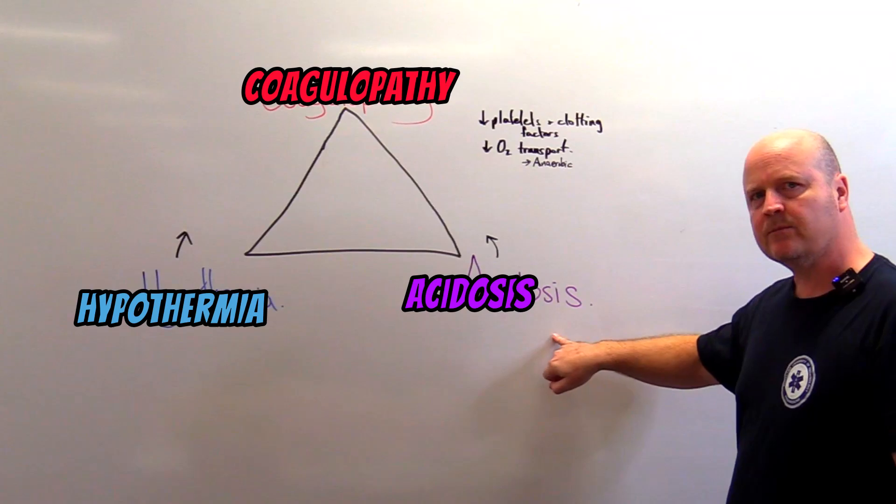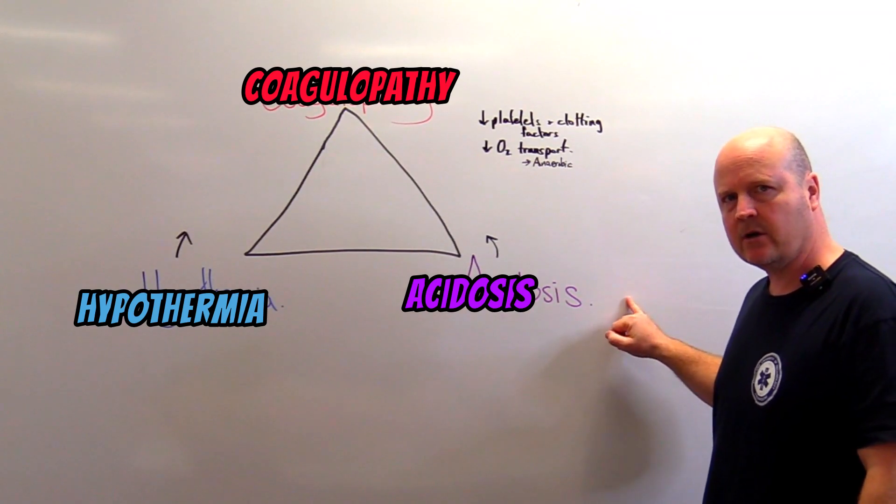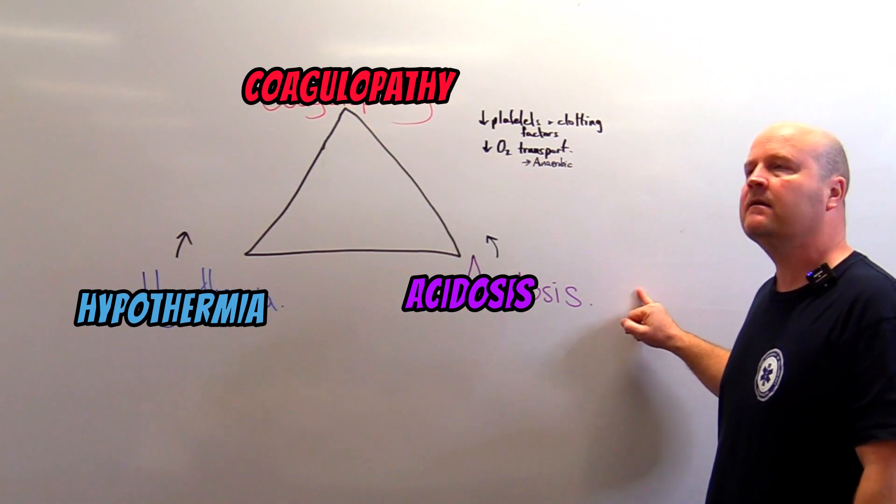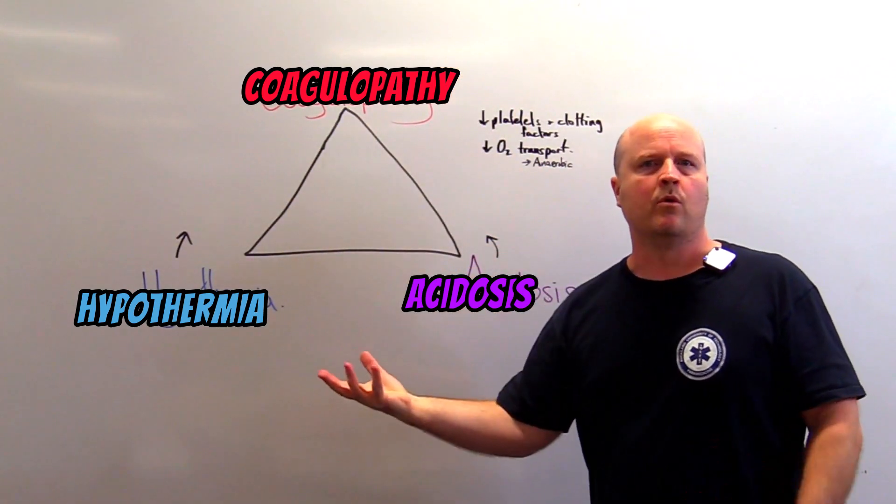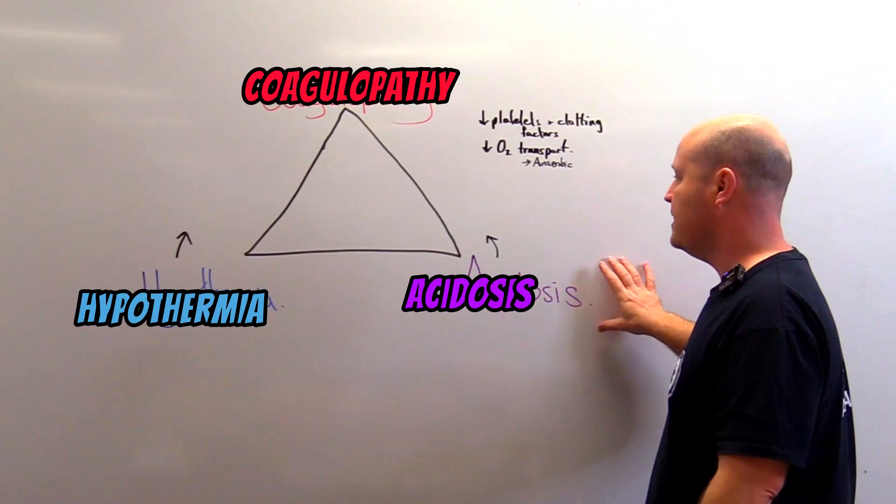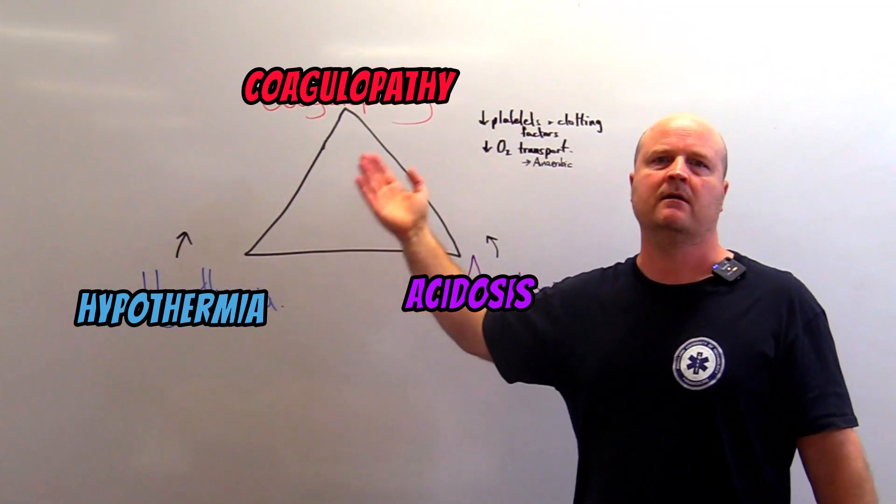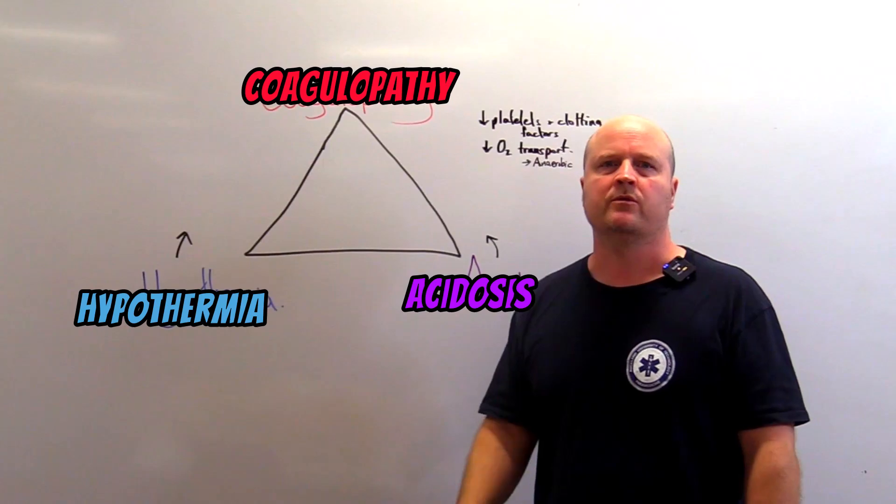If our body gets more acidic and we're acidotic then this again is gonna limit our clotting so more coagulopathy. So you can see these three conditions feed back into each other and make our situation worse.